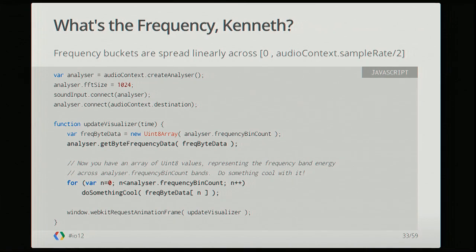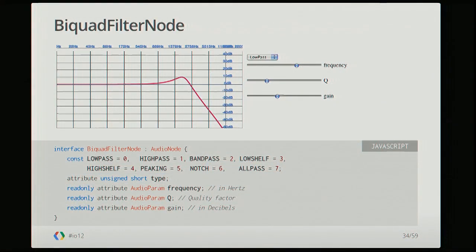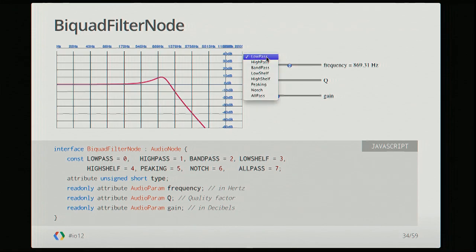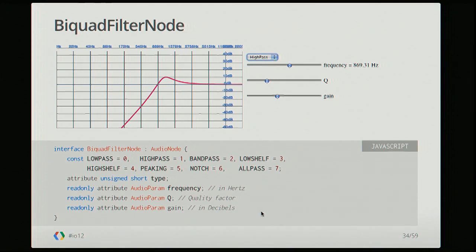Filtering is a process that happens in the frequency domain — it changes the response across frequencies. We have a bunch of different types: low pass, high pass, band pass, low and high shelving filters, peaking filter, notch filter, and all pass filter. The parameters are frequency and Q — also referred to as quality or resonance. Pumping up the Q accentuates whatever the frequency is, causing a resonance right at that spot.